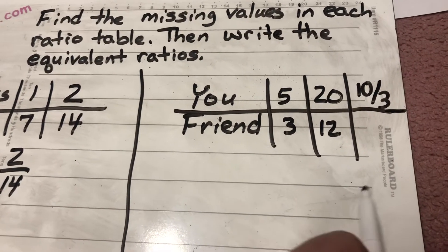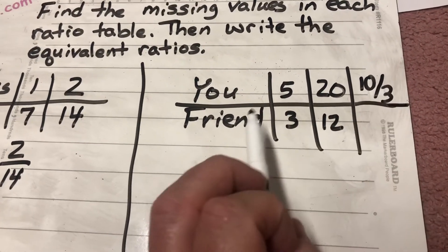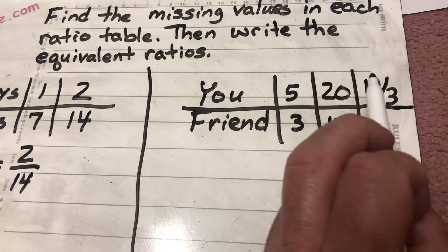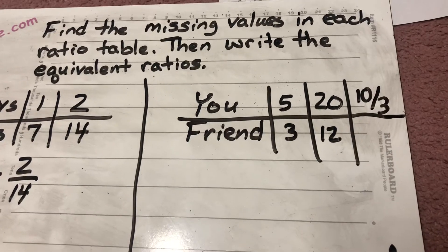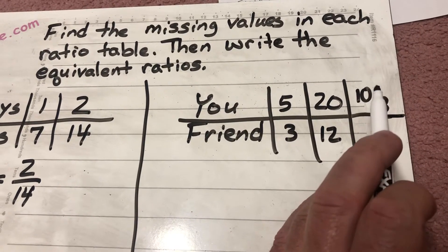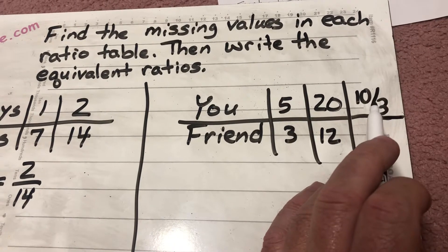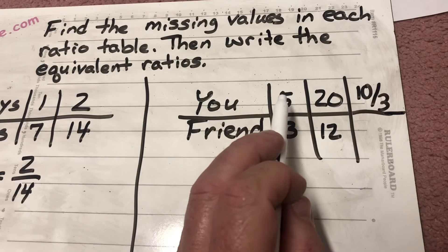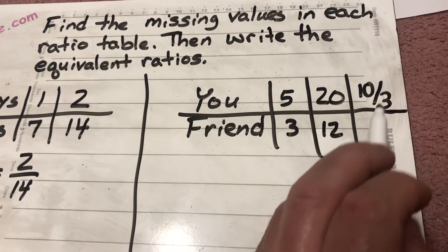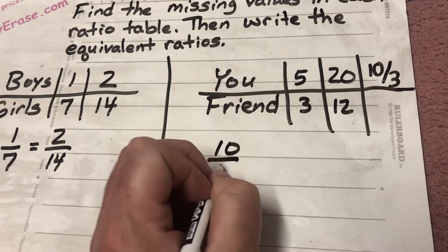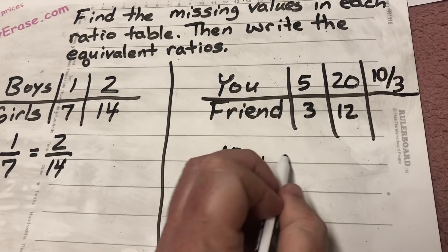Well, I do know that for every 5 parts that I have, my friend only has 3. So 10 over 3 is kind of an interesting thing. But what I can do is figure out, well, what would that be as 5 parts? Because I know that for every 5 parts that I have, my friend has 3. So I can take that 10 over 3 and I can divide it by 5.